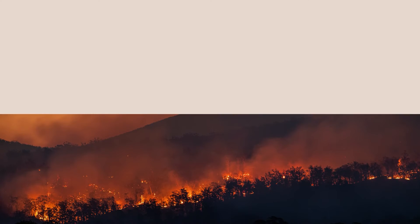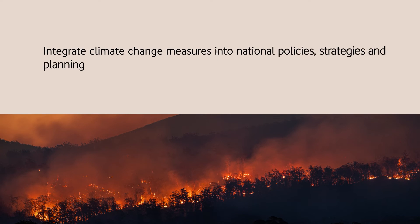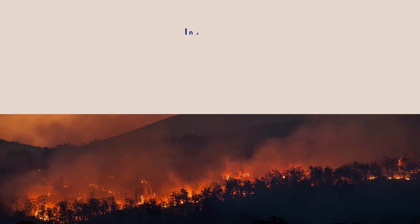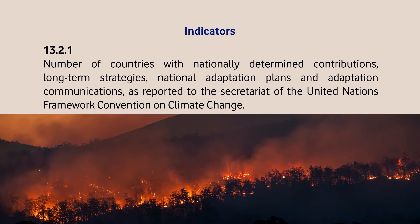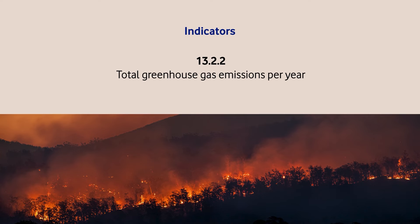Target 13.2 talks about integrating climate change measures into national policies, strategies, and planning frameworks. There are two indicators linked to this target. Indicator 13.2.1 is the number of countries with nationally determined contributions, long-term strategies, national adaptation plans, and adaptation communications as reported to the Secretariat of the UNFCCC. Indicator 13.2.2 is total greenhouse gas emissions per year.